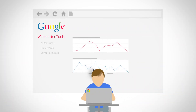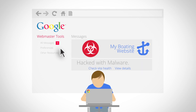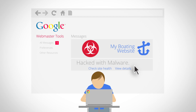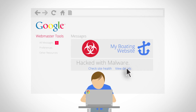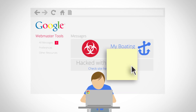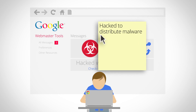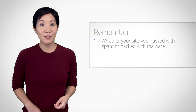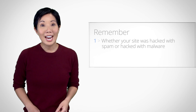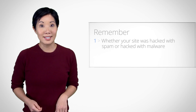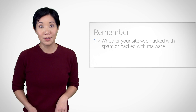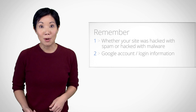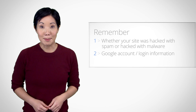Alternatively, the message in Webmaster Tools might mention your site is infected with malware. This is the message that some pages on your site may cause visitors to be infected with software designed to access confidential information or otherwise harm their computers. Please take note that your site was hacked to distribute malware. Now that you've verified ownership of your site in Webmaster Tools and read the critical message to understand the type of damage caused by the cyber criminal, whether spam, phishing, or malware, you're better prepared for the steps ahead.